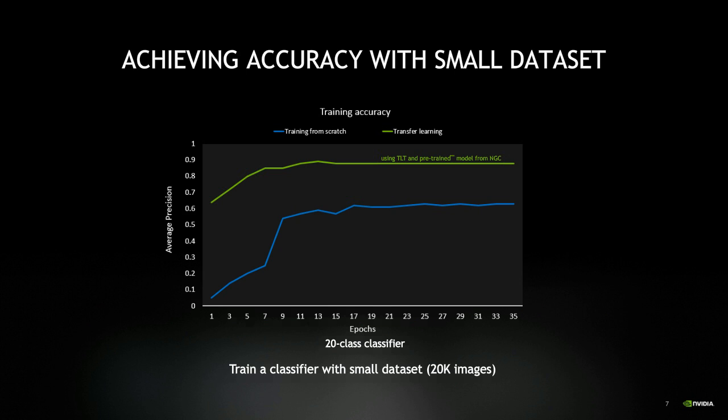Let's say you're assigned to train a 20-class classifier with a thousand images per class — a rather small dataset. Training from scratch with 20,000 images achieves about 60% accuracy: good, but not great. If you take the same 20,000 images and use one of the pre-trained models, you see close to 80–90% accuracy without even increasing your dataset. Applying transfer learning on a ResNet-18 classifier network can drastically increase accuracy from 60% to 80% — and you can even transfer to a completely different domain.